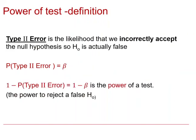The probability of a Type II error, denoted beta, is the probability of incorrectly accepting a false null hypothesis. The power of a test is 1 minus beta, which is the probability of correctly rejecting a false null hypothesis.